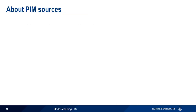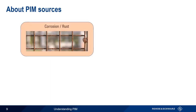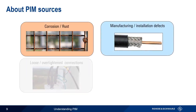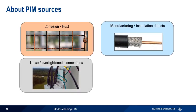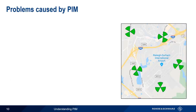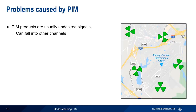The junction of dissimilar materials or metals is probably the most common source of PIM, and these junctions can be created in various ways. Corrosion or rust is a very common culprit, as are defects in manufacturing or installation. Loose or over-tightened connectors are another source of PIM, and even passive components such as directional couplers can lead to PIM issues. PIM products are almost always undesired signals that can fall into other channels or bands, creating noise, distortion, etc.